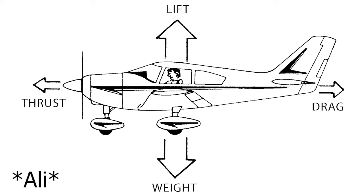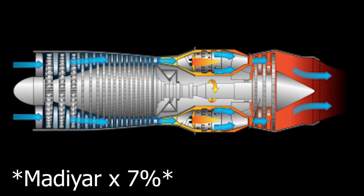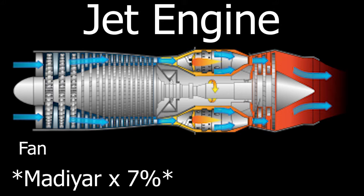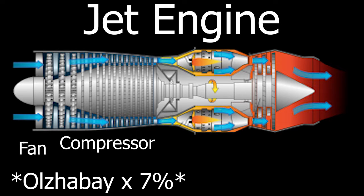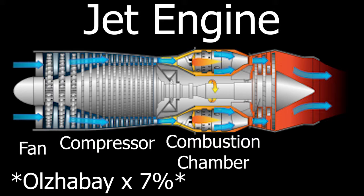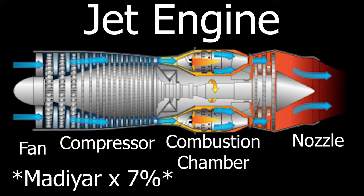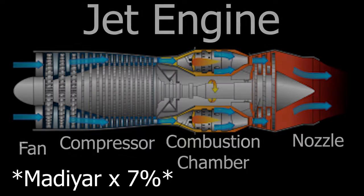Last but definitely not least, thrust force. Thrust is the force which makes the aircraft move forward. To produce thrust, we need a jet engine. The engine sucks air with a fan; once inside, a compressor raises the pressure of the air using fans with many blades. The compressed air is then sprayed with fuel in the combustion chamber and an electric spark ignites the mixture. The air becomes hotter and faster, and the burning gas expands through the nozzle at the back of the engine. As jets of gas go out, the aircraft moves forward. The jet engine operates on Newton's third law: for every action there is an equal and opposite reaction. That is why, to produce high thrust, we need to make the exit velocity much greater than the incoming velocity.